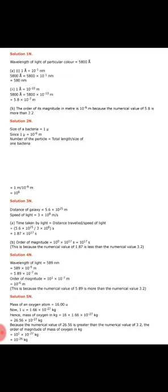Next question: distance of a galaxy is given and speed of light is given; you need to find time. Formula: time = distance / speed. So divide 5.6 × 10 raise to 25 by 3 × 10 raise to 8. That gives 10 raise to 25 minus 8 = 10 raise to 17, and 5.6 ÷ 3 = 1.87. So time is 1.87 × 10 raise to 17 seconds. The B part can be ignored as it is not in your syllabus.